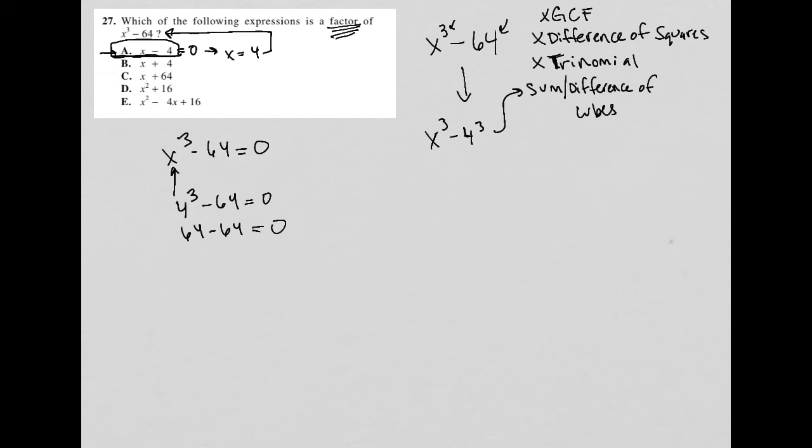Now, when I do the same thing for B, I'd get x equals negative four. And if I plugged negative four in here, I get a negative 64, and that is not equal zero. For C, so B is gone, for C, I'd get x equals negative 64. Again, putting negative 64 and cubing it and minus 64, that's also not going to give me a zero. So C is out.